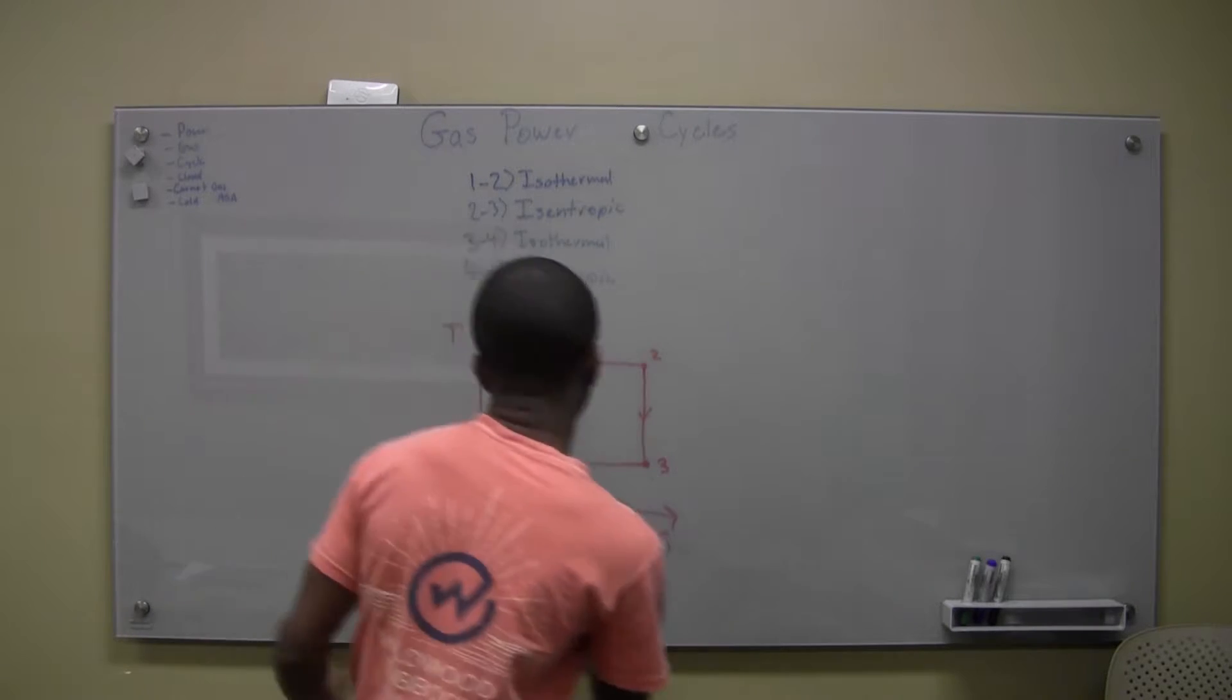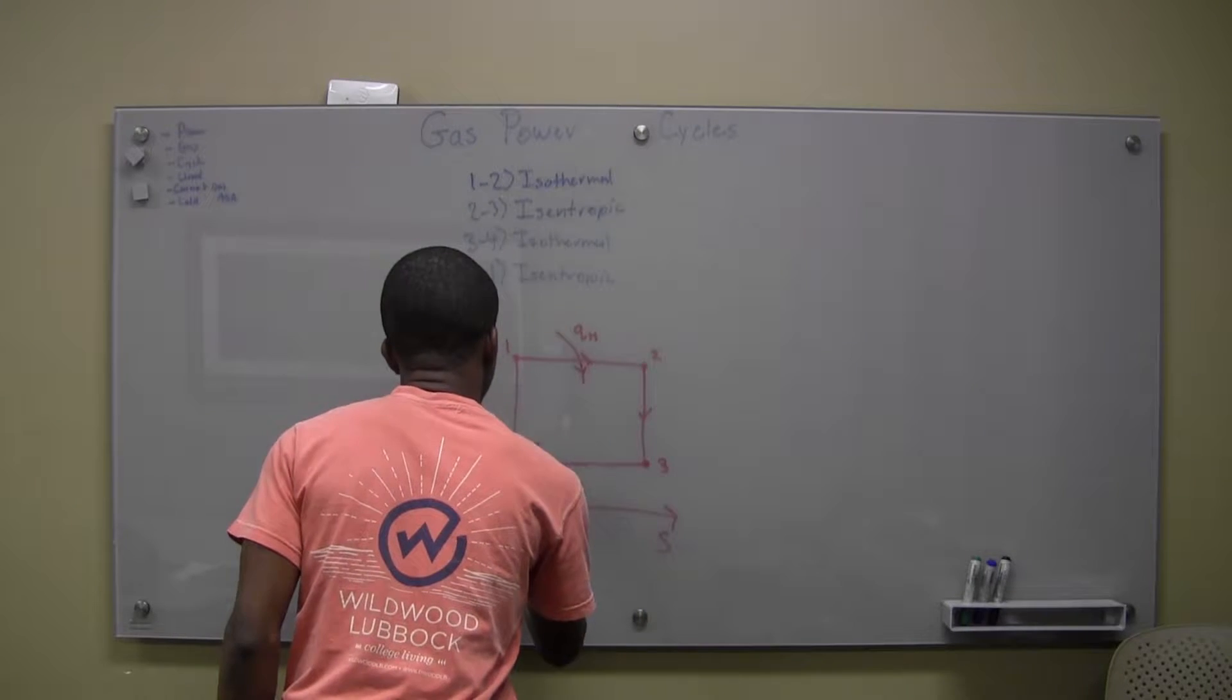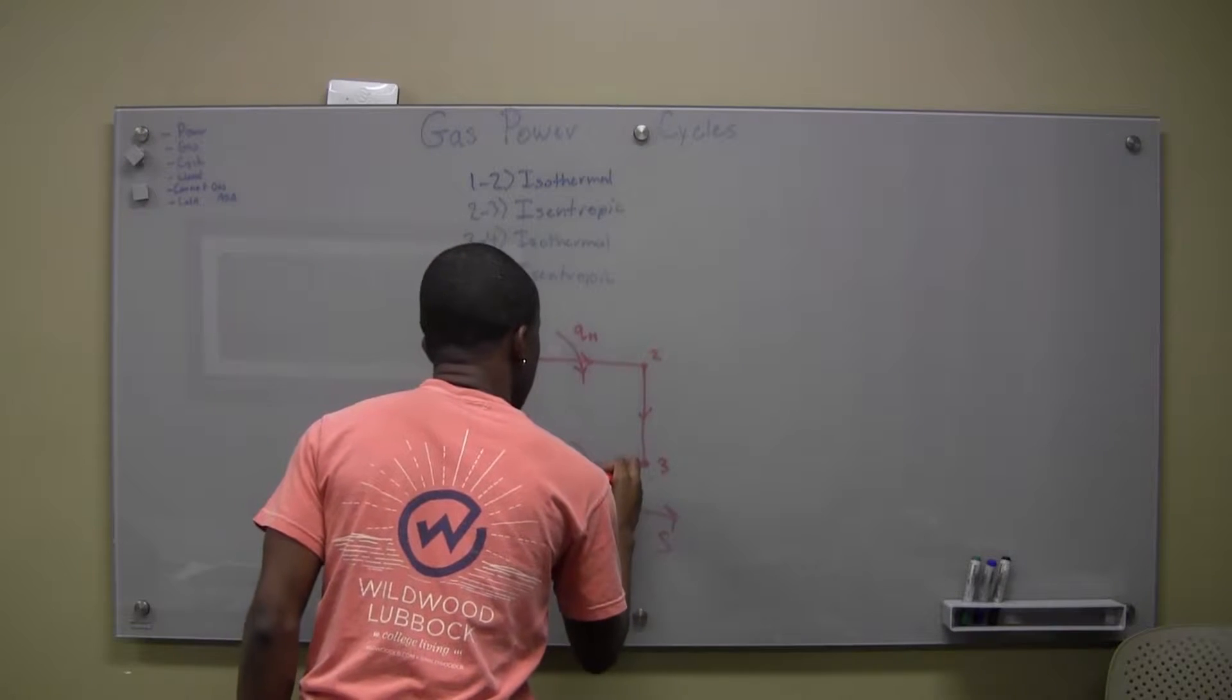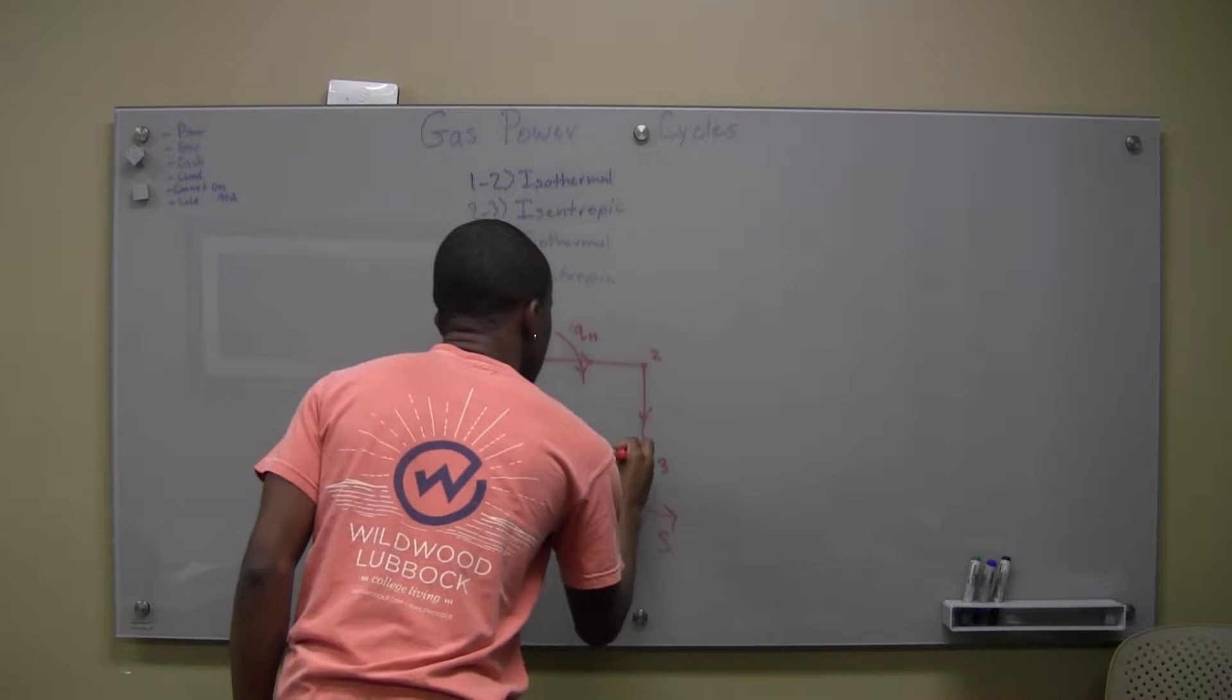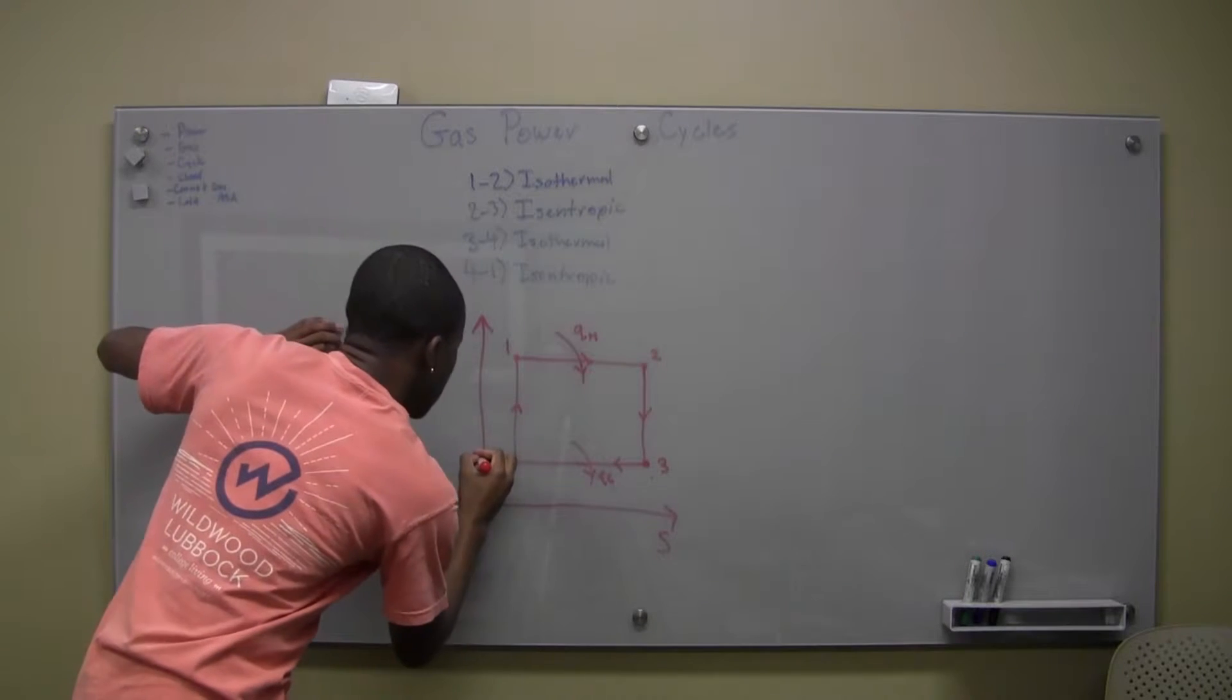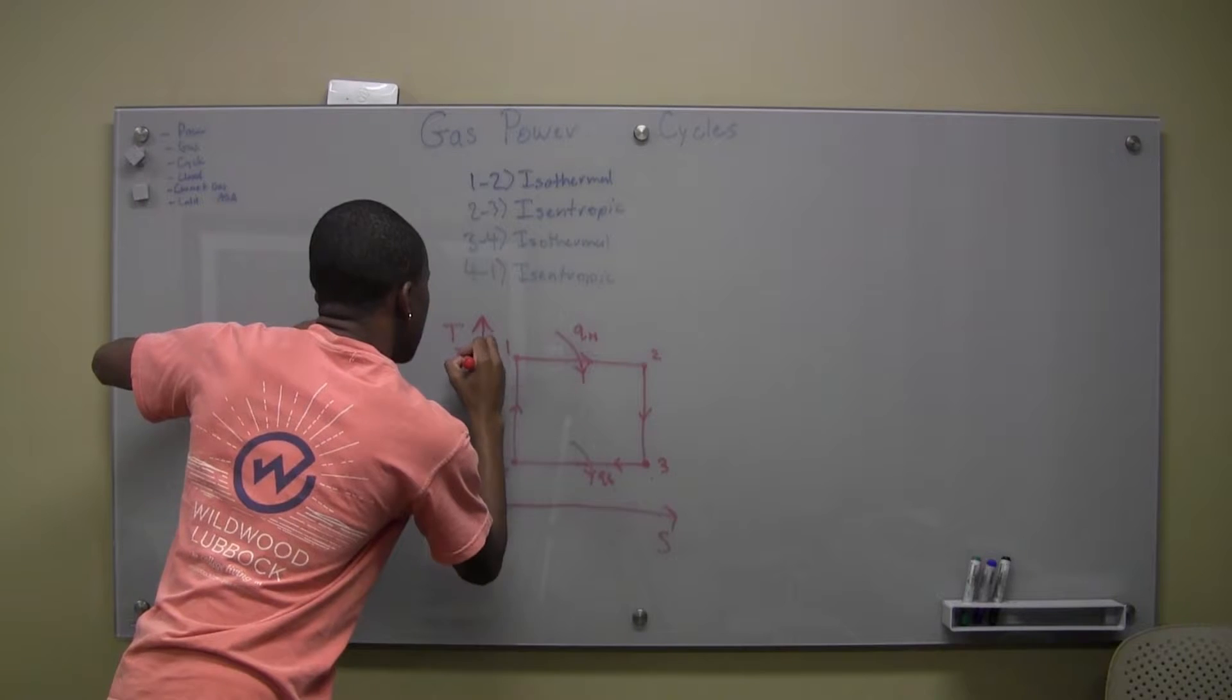And then we get something like this, and then something like this. And then this is our QL. And then we get four to one. So what we end up getting is something that looks like this, and then this is our TL, and this is our TH.